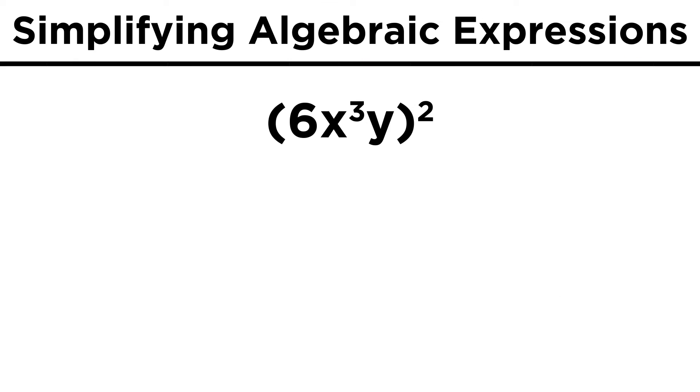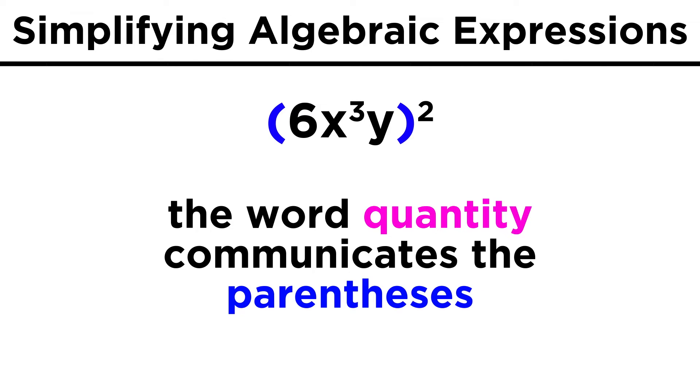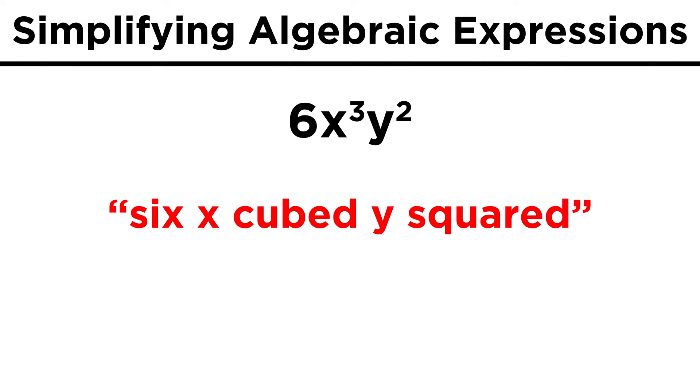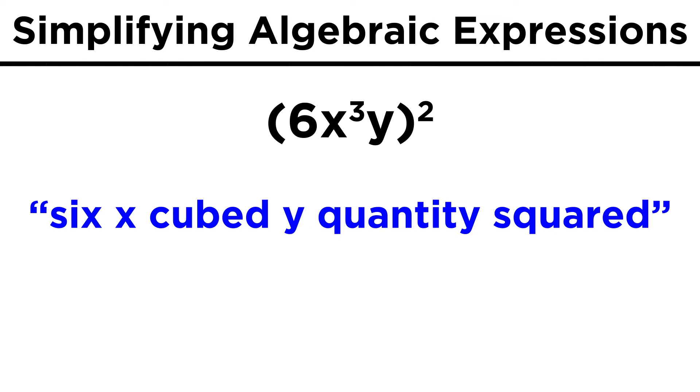First let's try something simple, six x cubed y quantity squared. When we say the word quantity this way, it's to distinguish between a whole term or set of terms undergoing an operation rather than just the last thing we mentioned. If I had simply said six x cubed y squared, this is what that language would imply, with the squared applying only to the y, but by inserting the word quantity, we can communicate the presence of these parentheses and the fact that all of this is being raised to this exponent.